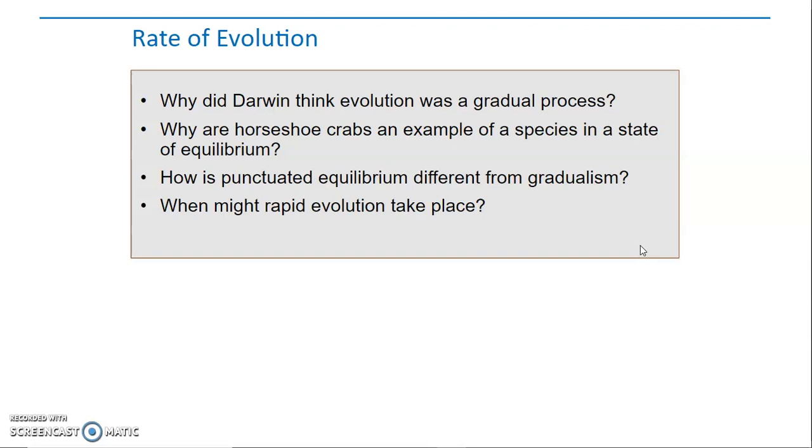Why are horseshoe crabs an example of a species in a state of equilibrium? Well, if we look at ancient fossils, we can see fossils are very similar, if not identical, to horseshoe crabs. So there is fossil evidence showing that they really haven't changed much.